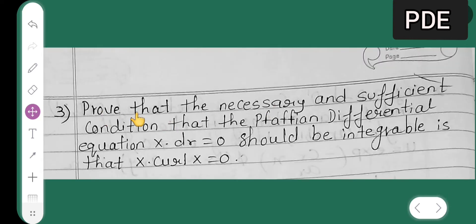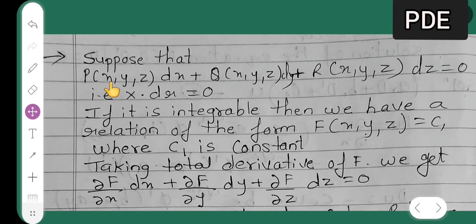Okay, so proof. The necessary and sufficient condition that the Pfaffian differential equation X·dr = 0 should be integrable is that X·curl(X) = 0. This is the theorem. Suppose that P(x,y,z)dx + Q(x,y,z)dy + R(x,y,z)dz = 0, that is X·dr = 0.